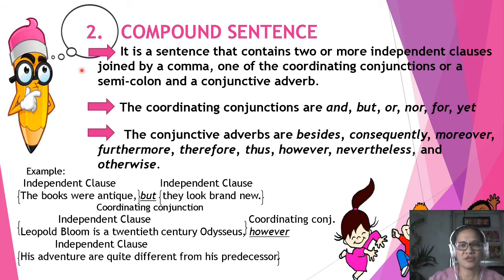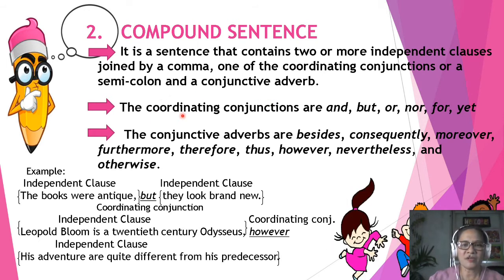Number 2: Compound Sentence. It is a sentence that contains two or more independent clauses joined by a comma, one of the coordinating conjunctions, or a semicolon and a conjunctive adverb. The coordinating conjunctions are: and, but, or, nor, or, and yet.